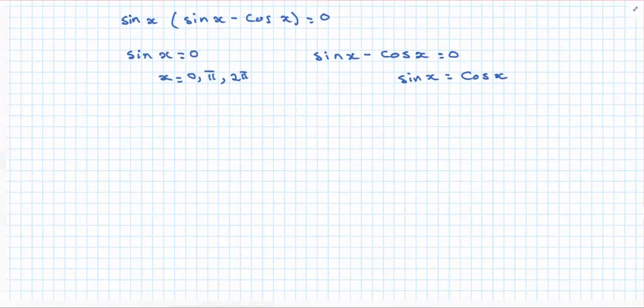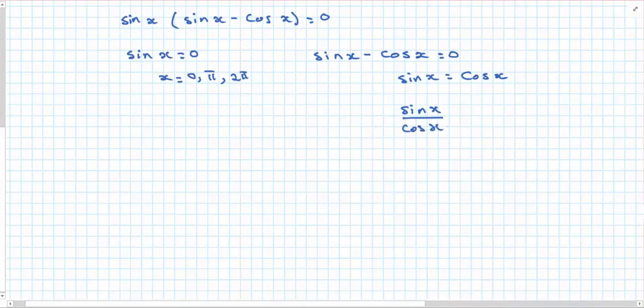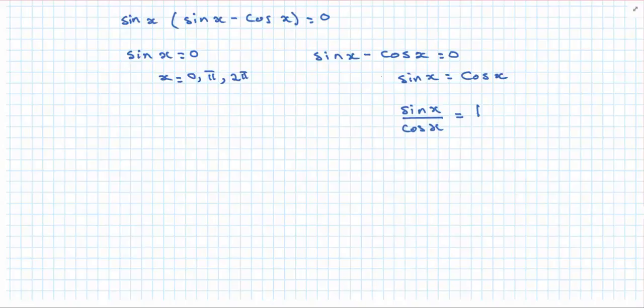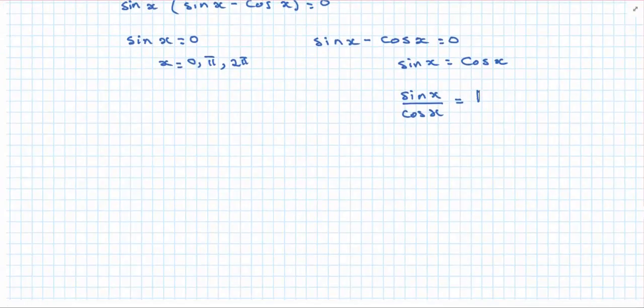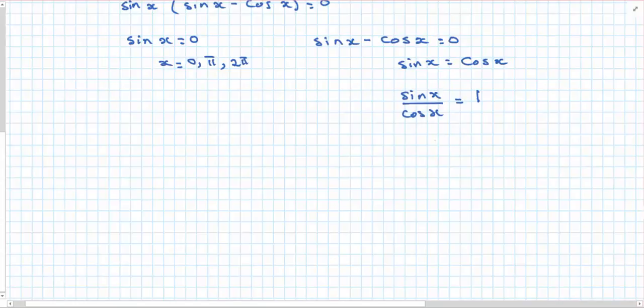Divide both sides by cos, and I end up with sin x over cos x equaling 1. Notice cos x cannot equal 0 because then we wouldn't be able to divide both sides by cos. So we need to make sure we take that into consideration. So when is tan equal to 1? Well, I know tan is equal to 1 at π over 4 and 5π over 4.